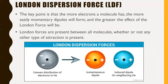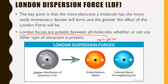The more electrons a molecule has, the more easily momentary dipoles will form and the greater the London force will be. Importantly, London forces are present between all molecules, whether or not any other type of attraction is present — so they happen in both polar and non-polar molecules. Even non-polar molecules will briefly behave as if they're polar because electrons constantly buzz around the nucleus, creating momentary uneven distributions.